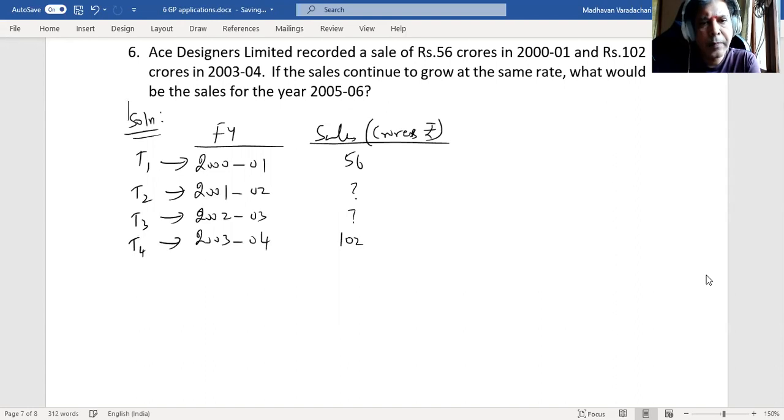Now term four value is known to be 102, and what is term four as per GP? It is a times r to the power of 3. a is known to be 56, this is term one, so 56 times r cube equals 102. That means r cube is 102 by 56.